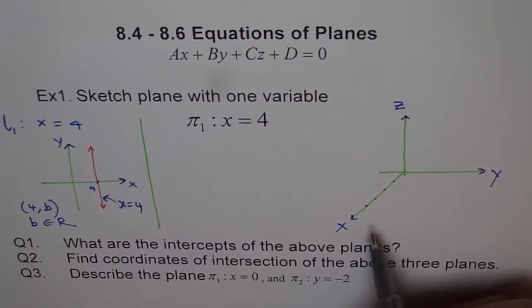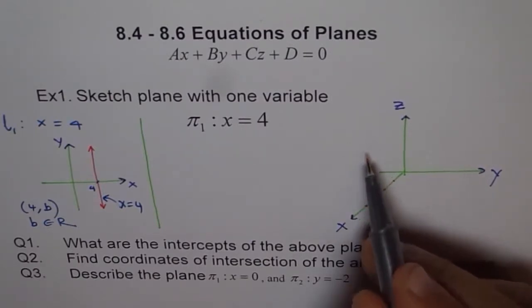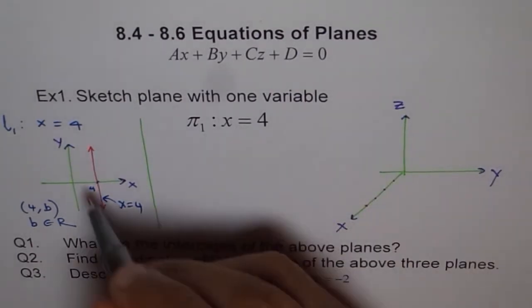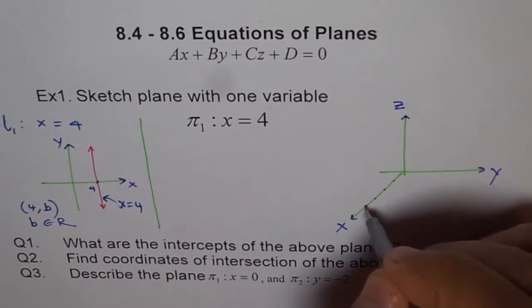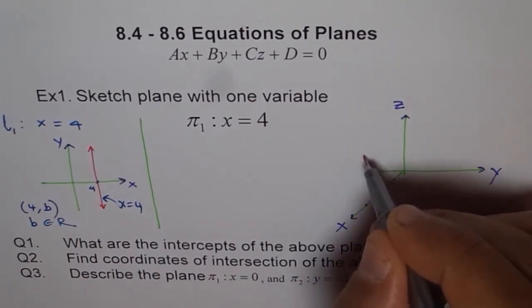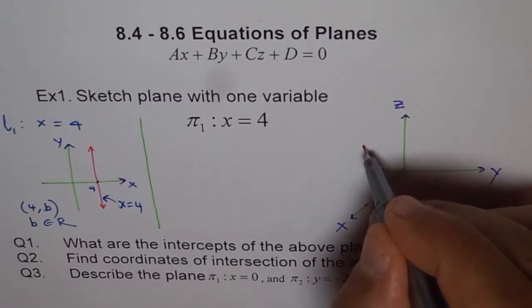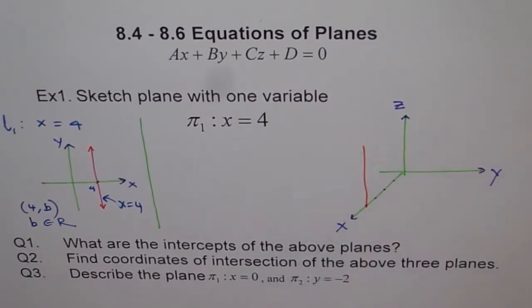So first we know a line x equals four will look like what? A line will be kind of like this. So we can at least draw a line first. So let me just sketch a line for you and then we will see how to do the plane part. So that's my line which is one side of my plane.